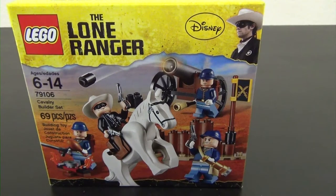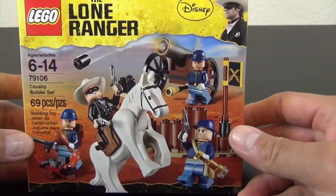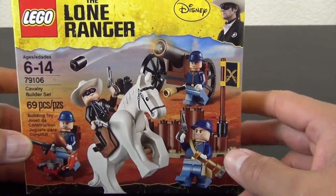Hey everyone, welcome back to the Hidden Brick where today we're going to build the Lego Lone Ranger Cavalry Builder set, set number 79106. Only 69 pieces, this is more or less a battle pack for the Lone Ranger theme.